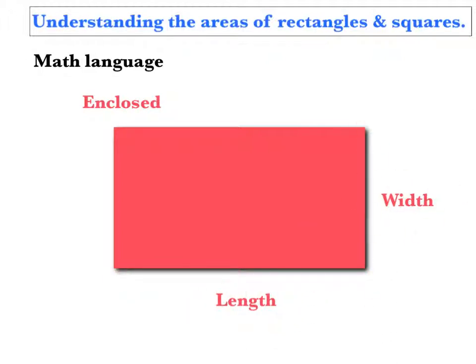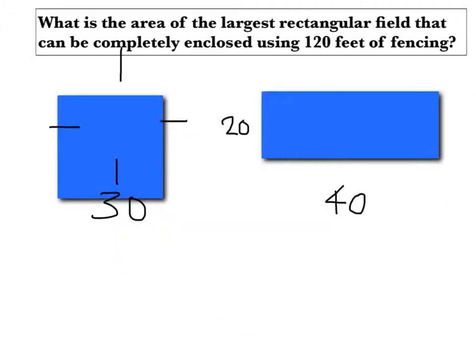Now we'll be moving on to show you how to actually solve a sample problem and how to apply this concept to a real problem. So our example problem is: what is the area of the largest rectangular field that can be completely enclosed using 120 feet of fencing?